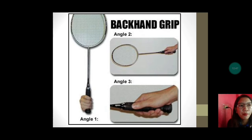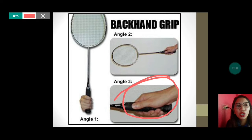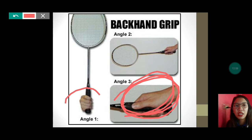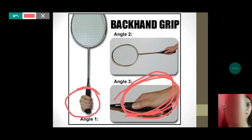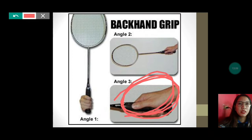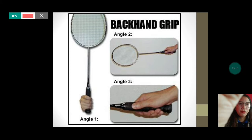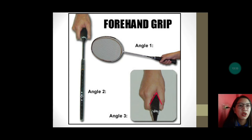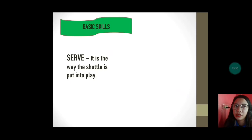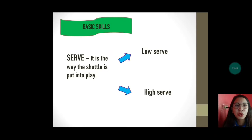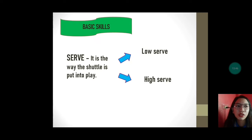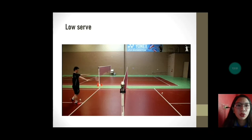Sa backhand grip, nakaikot lang yung pinakaharap ng kamay. The forehand grip naman is nakabilog lang siya, hindi siya nakapush — pansin ninyo dito sa angle. Under basic skills is also the serve or service — it is the way the shuttle is put into play. Meron tayong dalawang types of serve: yung low serve at saka yung high serve. Familiar naman siguro tayong lahat sa serve kung paano natin i-serve yung shuttlecock using the racket.